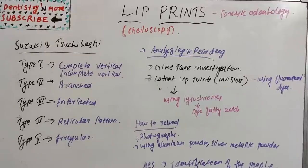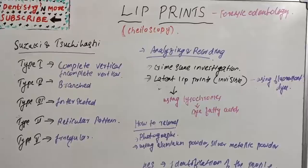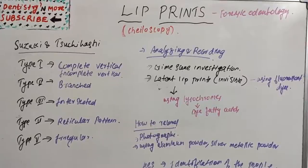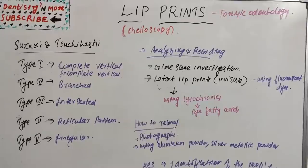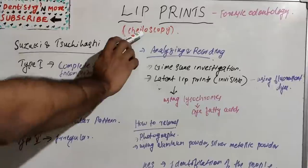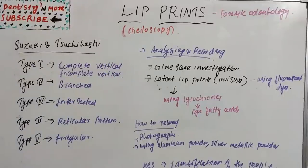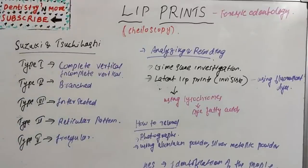By definition, lip prints are the normal lines and fissures in the form of wrinkles and grooves present in the zone of transition of the human lip — the inner labial mucosa and the outer skin. The study of lip prints is known as cheiloscopy.